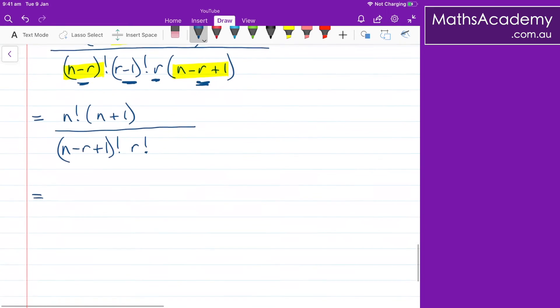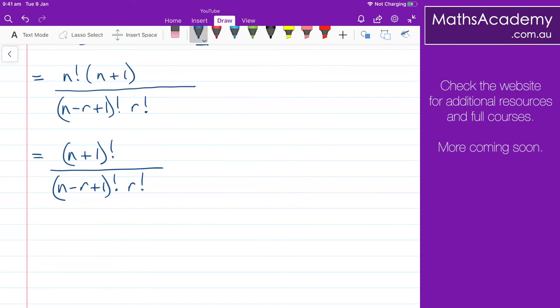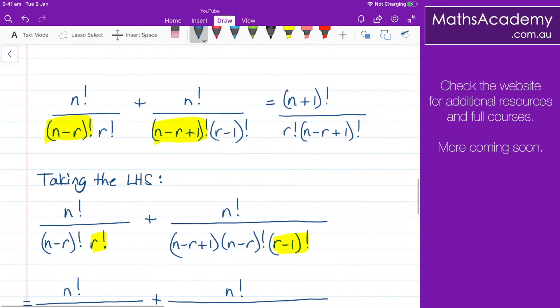And then just finishing off in the numerator, the n plus one and the n factorial. Well, I can rewrite that as n plus one factorial. And that's all over n minus r plus one factorial multiplied by r factorial. And that is what we were required to find. That is the right hand side. So let's just go back up. And there we have it. We've actually shown that the left hand side is equal to the right hand side.